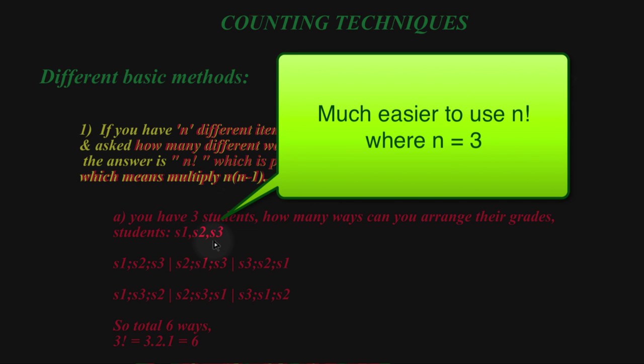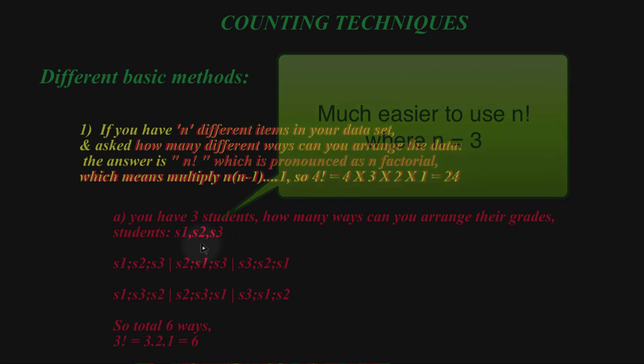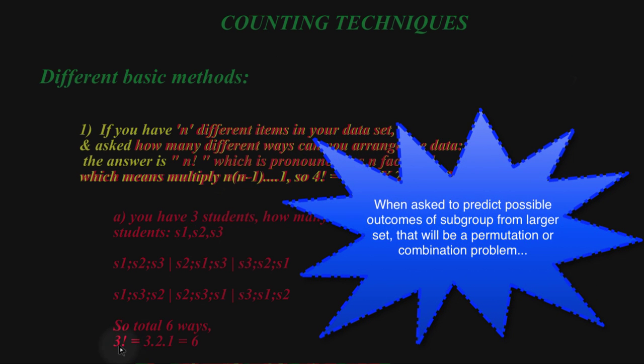But you could say, there's 3 students and I'm just trying to arrange them. I'm not looking at a subgroup of the larger as a permutation or combination would be. I'm looking for the entire list. So that would be just 3 times 2 times 1.